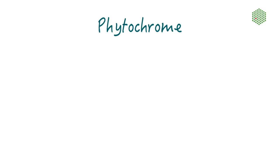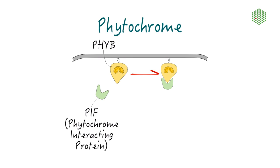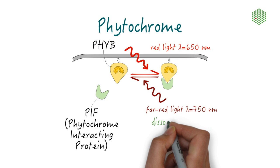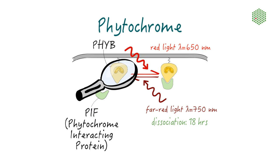The Phytochrome system is also based on light-induced dimerization. Upon light activation, Phytochrome B, or PhiB, binds the small phytochrome interacting factor. PhiB is activated by red light with a 650 nm wavelength and has a big advantage that dissociation can be triggered specifically by far red light of 750 nm wavelength. The dissociation time of the already formed dimer in the dark is as high as 18 hours.